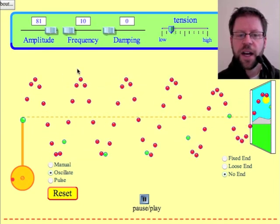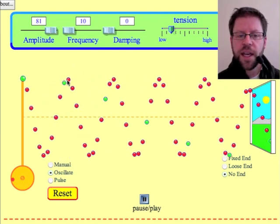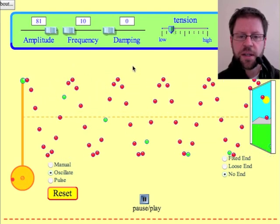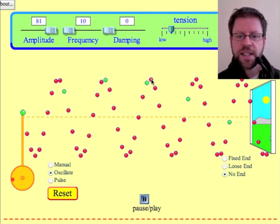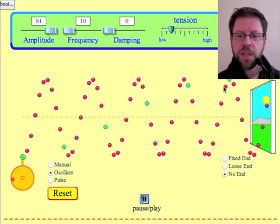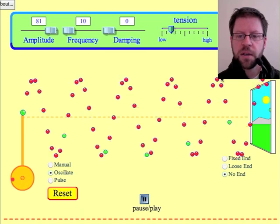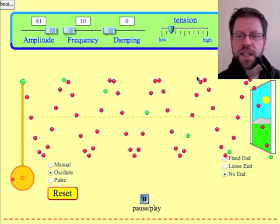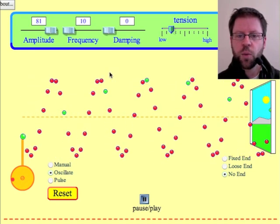You can identify the wavelength by looking at one crest relative to an adjacent crest. So the distance, it's something that we would actually measure in some units of length, perhaps meters. The distance is what we refer to as the wavelength here.